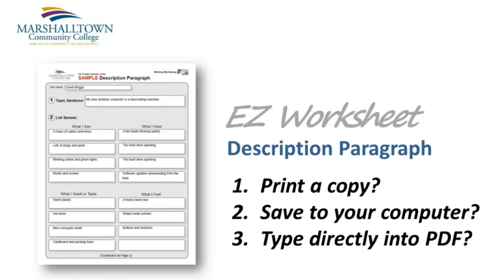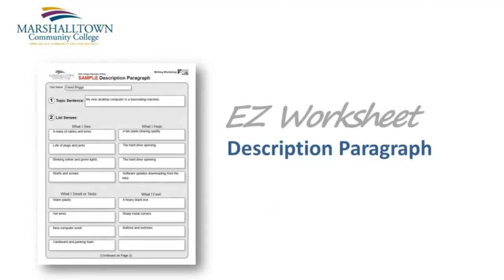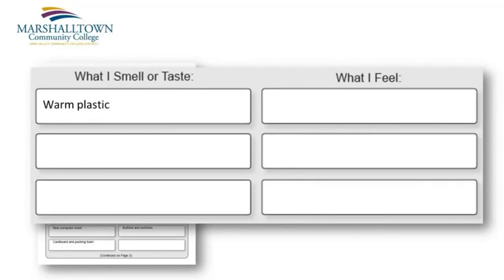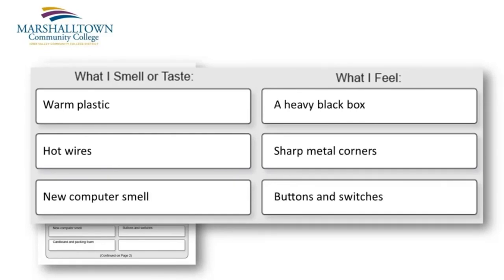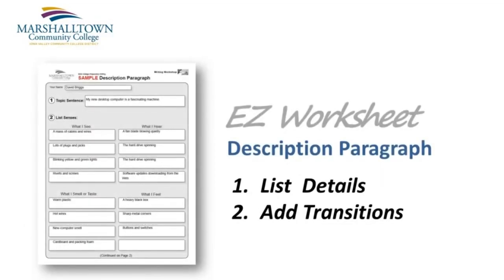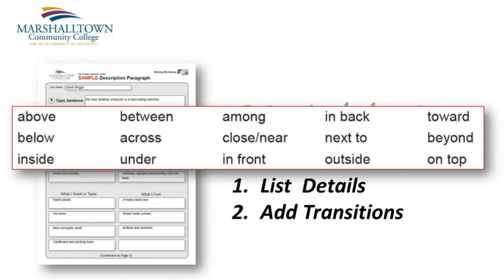If you decide to use the PDF form to complete the assignment, just make sure that you have a saved copy of the document somewhere on your computer. Let's take a closer look at the worksheet. Sometimes the best way to start work on a description paragraph is to simply make a list of the things you see, hear, smell, taste, or feel. This first step in the worksheet should give you plenty of details to work with as you develop the sentences of your paragraph later. The next step in the worksheet is to find transition words that not only help readers move from one sentence to the next, but also provide a better picture of where each item is located — words like under, across, and below.